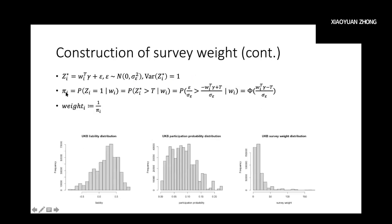After we calculate the participation liability of each individual, we use the probit model to estimate the participation probability of each individual, and then define the survey weight as the inverse of his or her participation probability. The distribution of the participation probability in the UK Biobank is centered around 5%, because, as mentioned, the population prevalence of participating in UK Biobank studies is about 5%. This means our estimates indeed make sense.